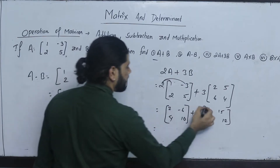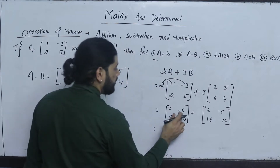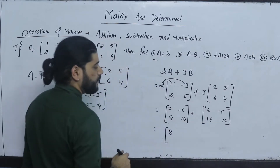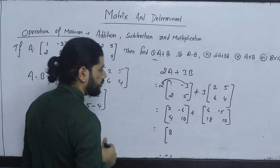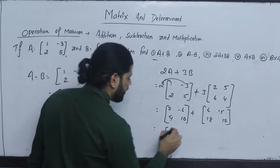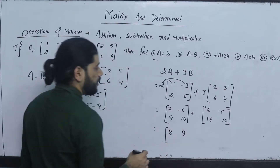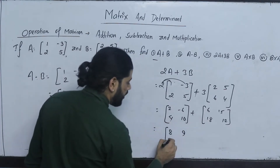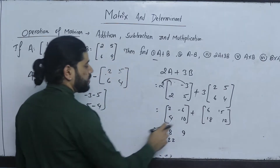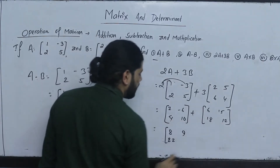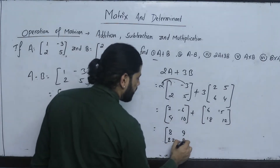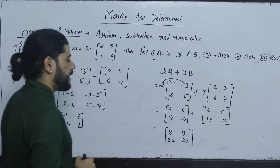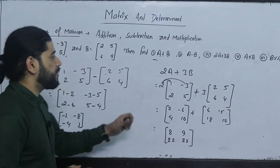Now we will multiply: 2 plus 6 gives 8, minus 6 plus 15. Results: 9, 4, 18, 22, and 2 into 2 gives 22. Now we will compute 2A plus 3, involving addition and subtraction operations.